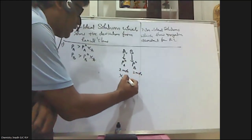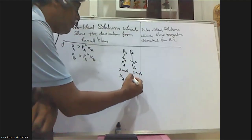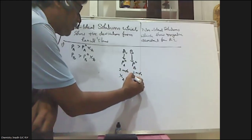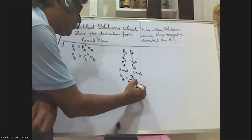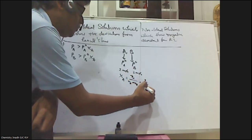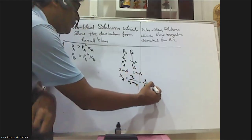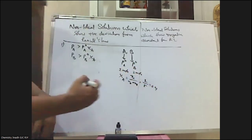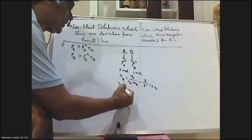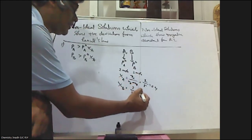What is the mole fraction of A? XA is given by number of moles of A divided by number of moles of A plus number of moles of B, which equals two divided by five, so XA = 0.4. Similarly, the mole fraction of B, XB, is equal to three by five, which is 0.6.